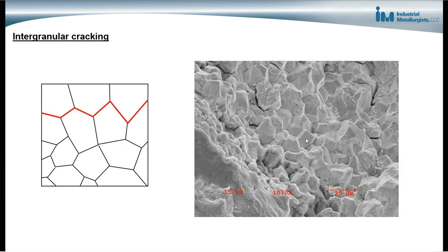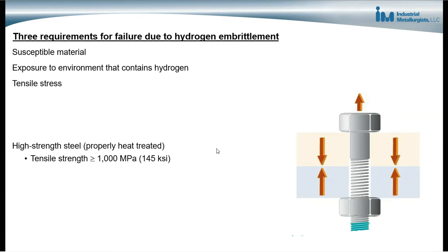There are three requirements for failure due to hydrogen embrittlement. You have to have a susceptible material. You have to have exposure to an environment that contains hydrogen. And the material has to be exposed to tensile stresses. It can either be residual stresses or applied stresses or a combination of the two.